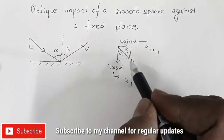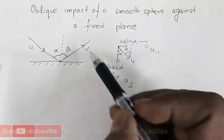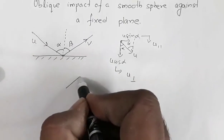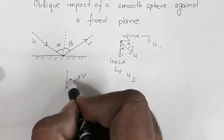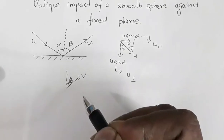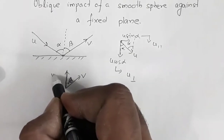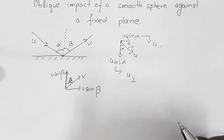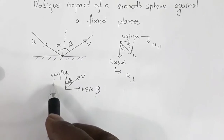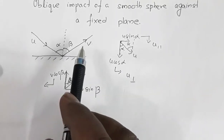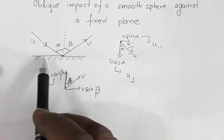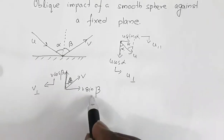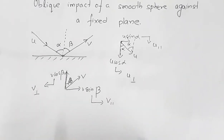u is the velocity of the sphere just before collision and v is the velocity just after collision. For the outgoing velocity v at angle beta, v cos beta is the component of velocity of the sphere perpendicular to the surface of impact, and v sin beta is the parallel component.